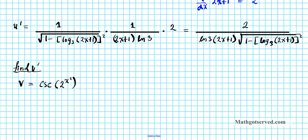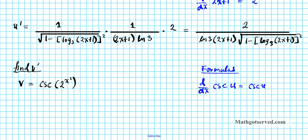Let's go over the formulas to find the derivative of v. For cosecant: d/dx of cosecant u — using u because the argument of cosecant is a function — equals negative cosecant u times cotangent u, times du/dx by the chain rule.